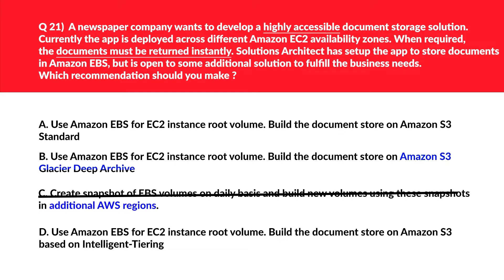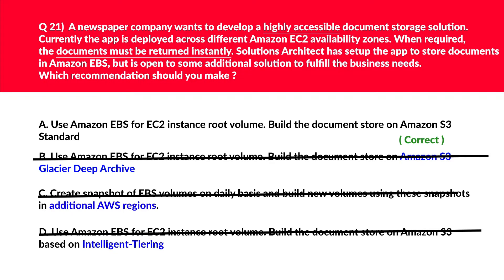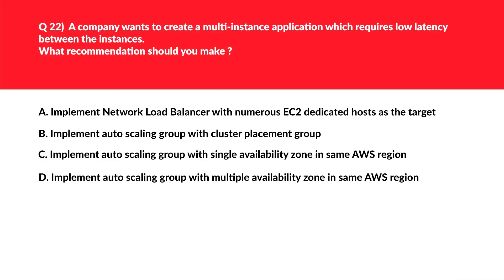Let's now look at option B. Glacier Deep Archive will not return the documents instantly as per the need of the question. Therefore this option is definitely out. Option D uses S3 Intelligent Tiering, which is used for unpredictable or changing access patterns. As per the question, documents need to be returned instantly — so we don't need Intelligent Tiering. S3 Standard is a perfect fit, hence we'll lock option A.